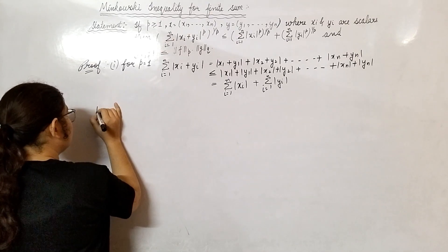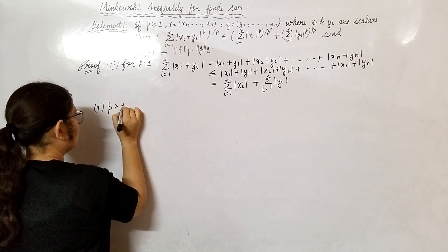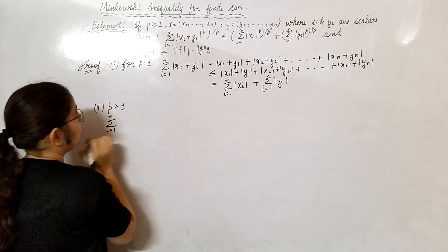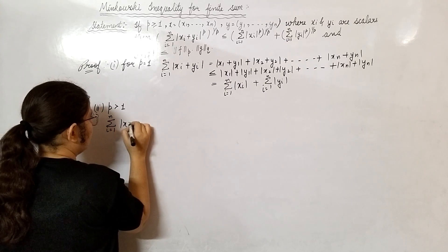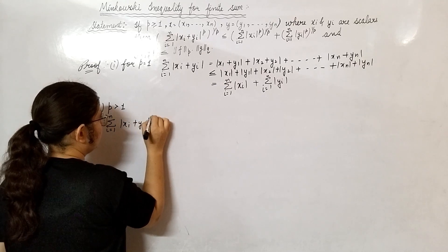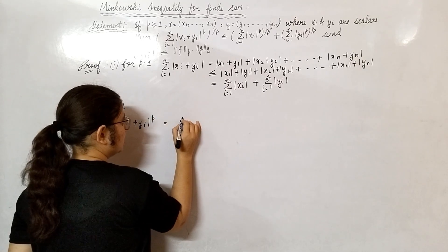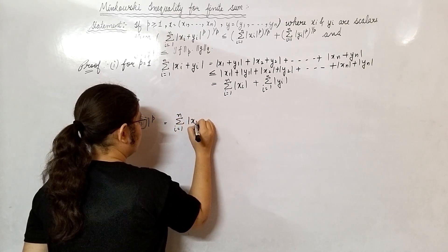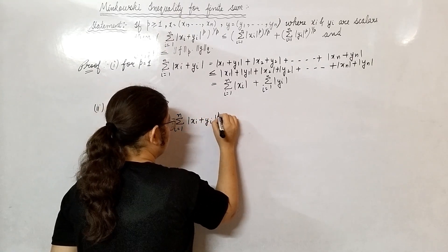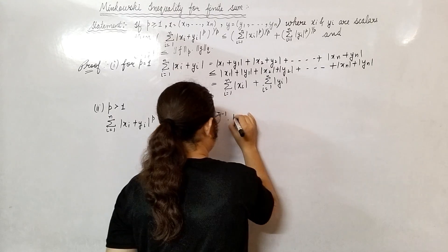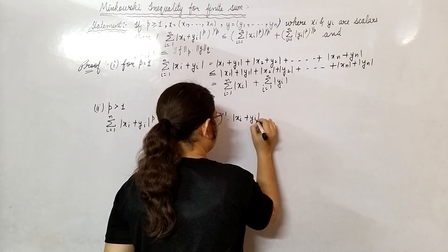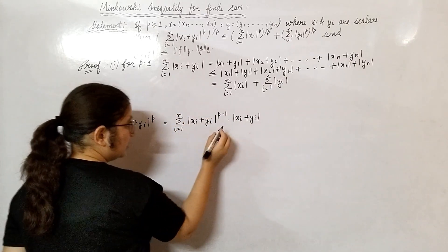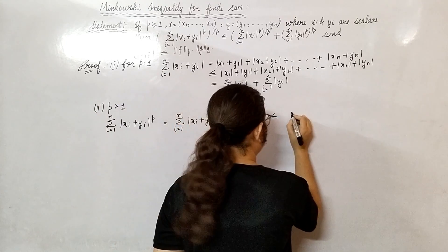Now we will show for p greater than 1. What we have? Summation i from 1 to n, |x_i + y_i|^p. Summation i from 1 to n, |x_i + y_i|^(p-1) into |x_i + y_i|. I can write this as... Now open this as an inequality form. What you will get?